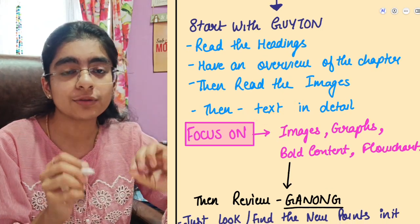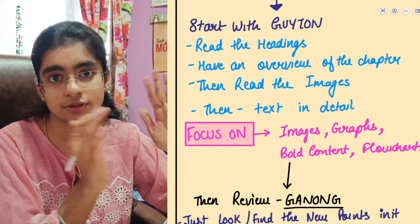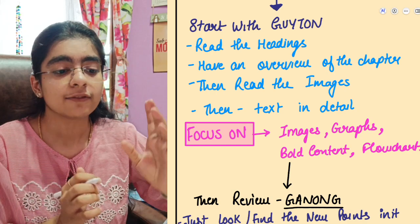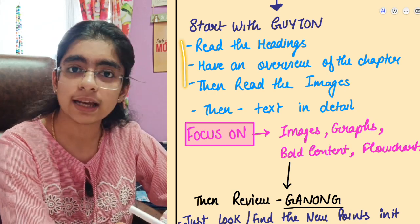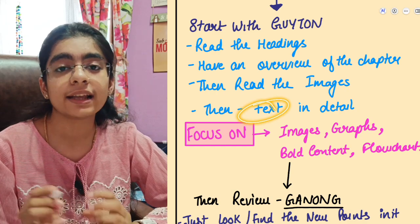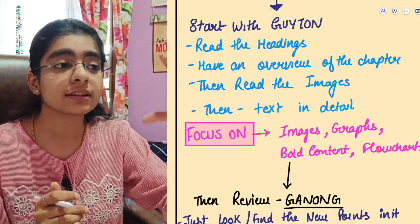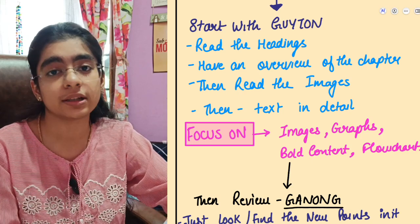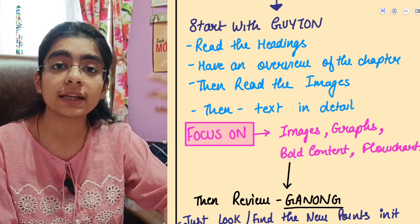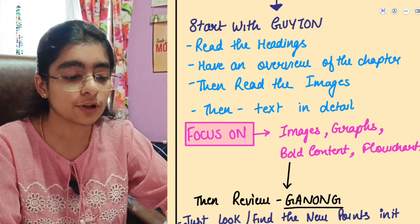You don't have to read from the first line to the last line of the chapter in one go — not in continuity. First follow these steps — headings, overview, images — and then read the text in detail. This will help you a lot because Guyton is such a huge book, and Ganong too, so this approach helps you read and grasp them effectively.